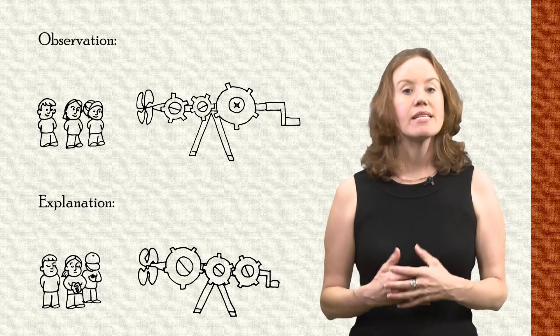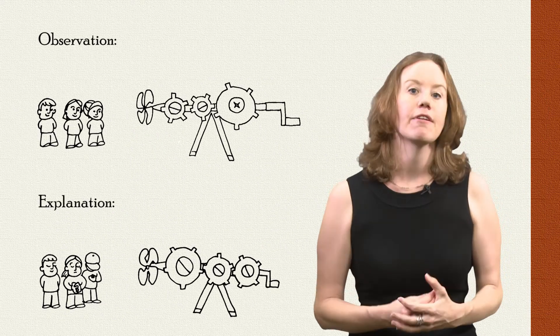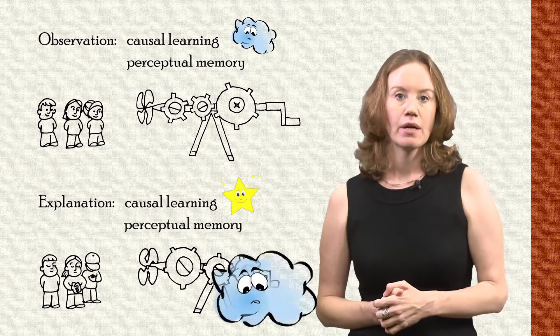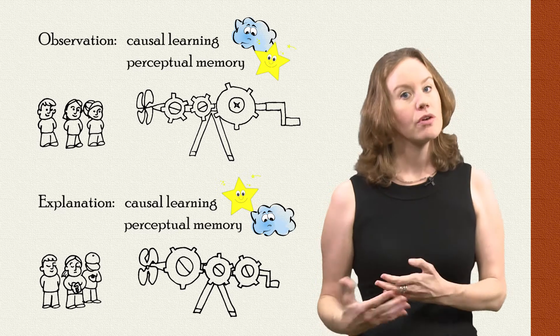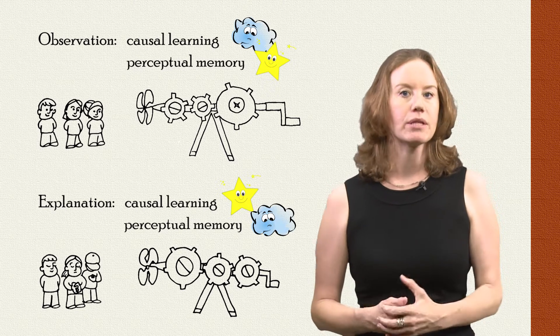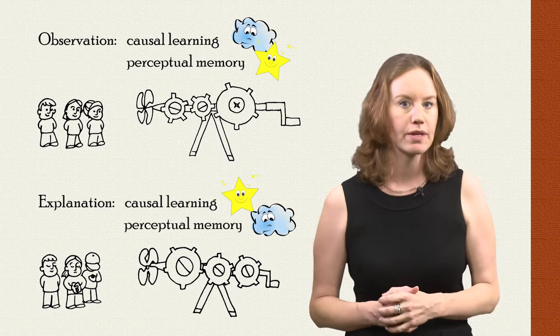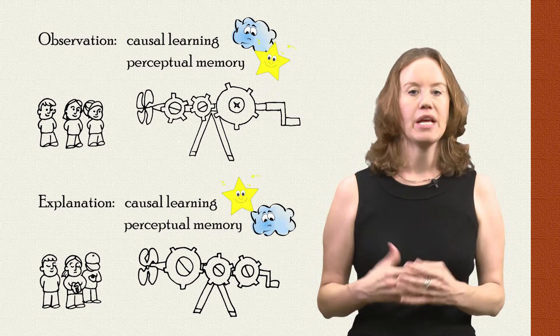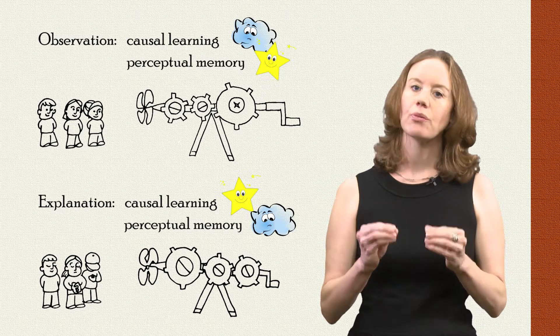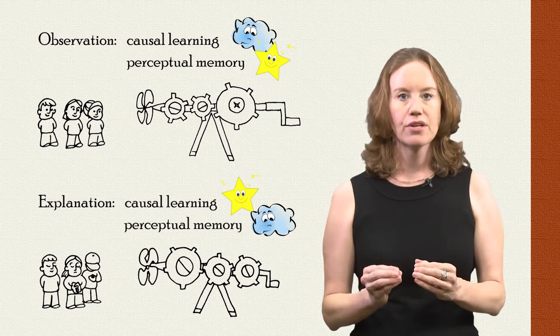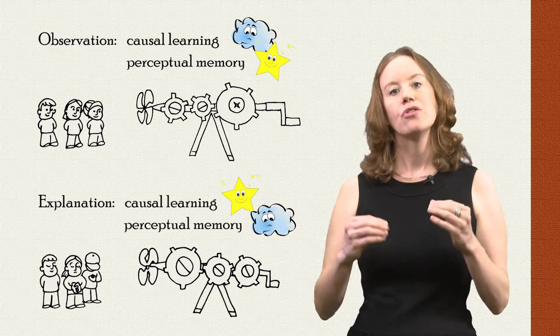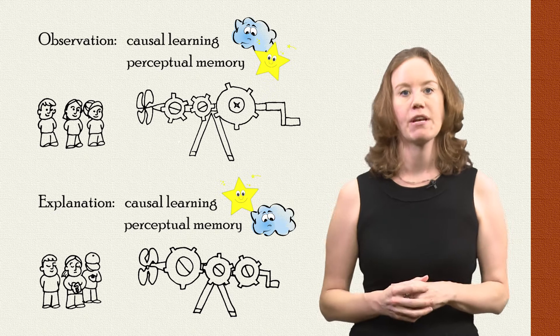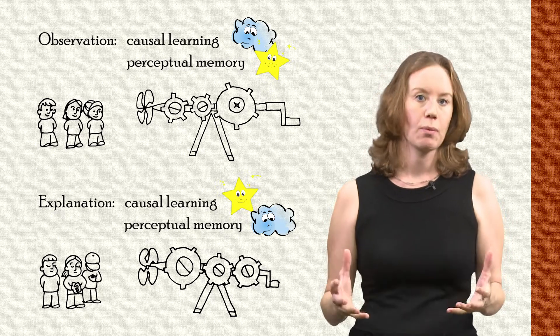And what we found is that explanation has a great benefit for causal learning, but has less of a benefit for memory of perceptual features. So children that described or observed actually remember more about what the machine looks like than children who have explained. Which would suggest that the learning benefits of explanation are unique and selective. Explanation really hones children's attention, guides their attention towards the underlying causal basis for the system, and has much less of a benefit for perceptual memory.